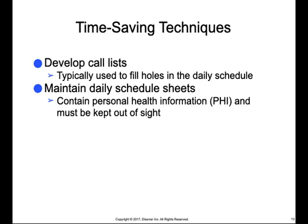The daily schedule sheet contains information transferred from the appointment book or electronic scheduler and is used in treatment rooms, doctors' private offices, laboratories, and other work areas. These sheets contain patients' names, scheduled procedures, and the amount of time needed. They also contain personal health information and must be kept out of sight — for example, covered with a piece of paper so that patients walking by cannot see other patients' information.